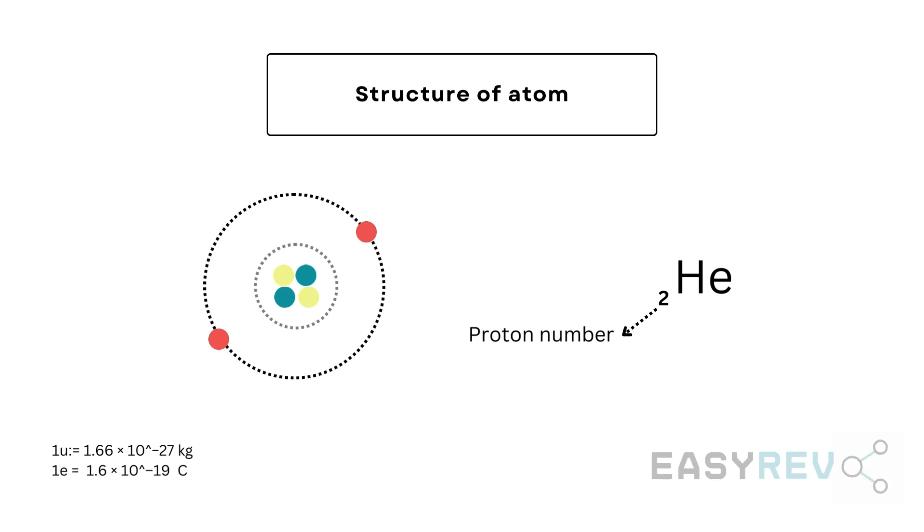On the other hand, its nucleon number is four, which means the sum of protons and neutrons inside the nucleus should be equal to four. Now all of this seems quite straightforward, right? But we know that nature is rarely ever that simple.